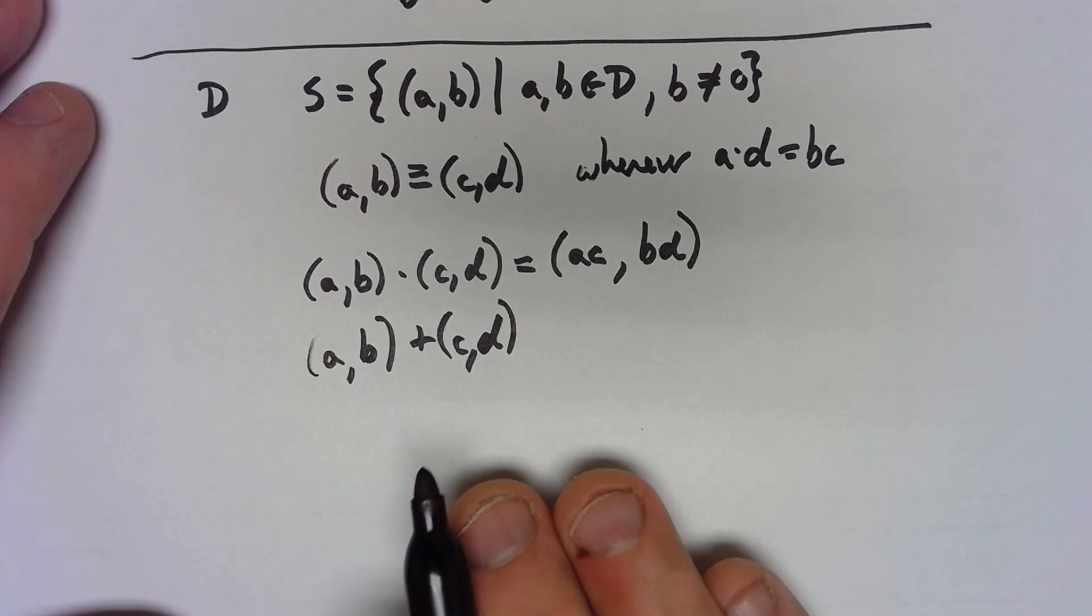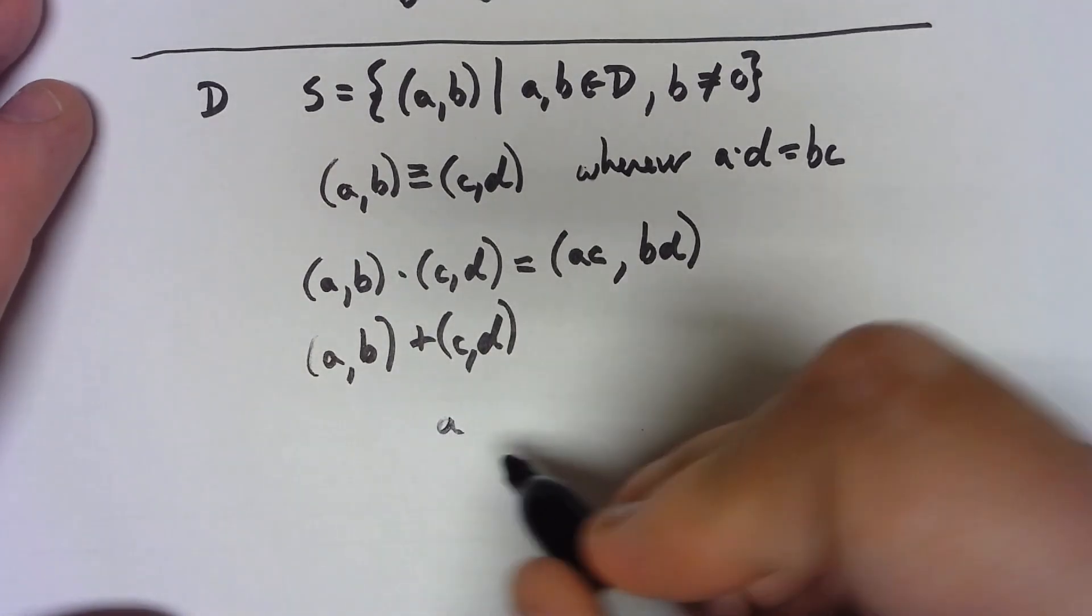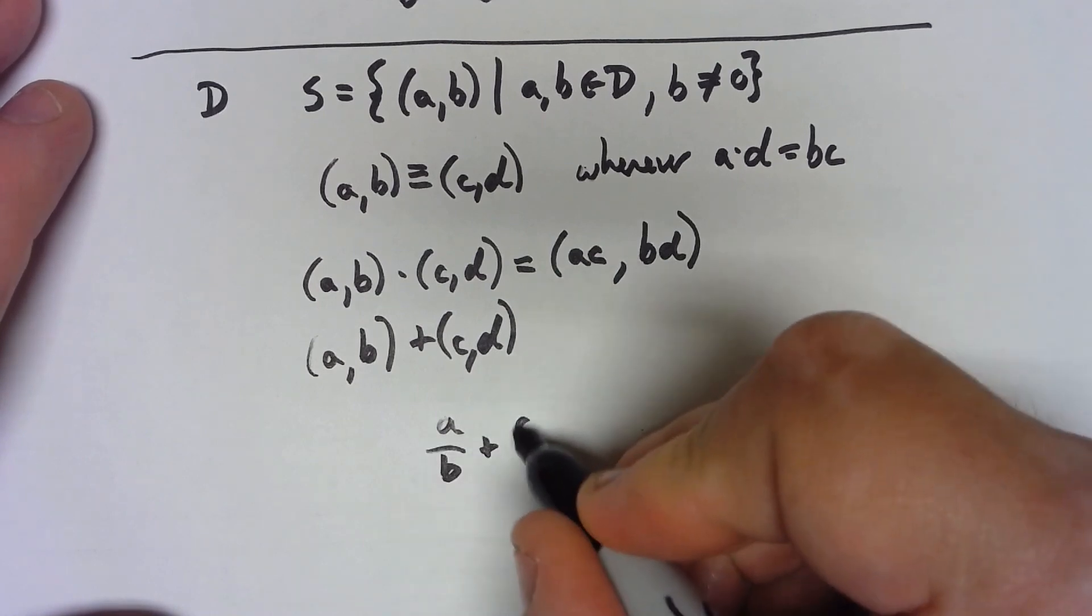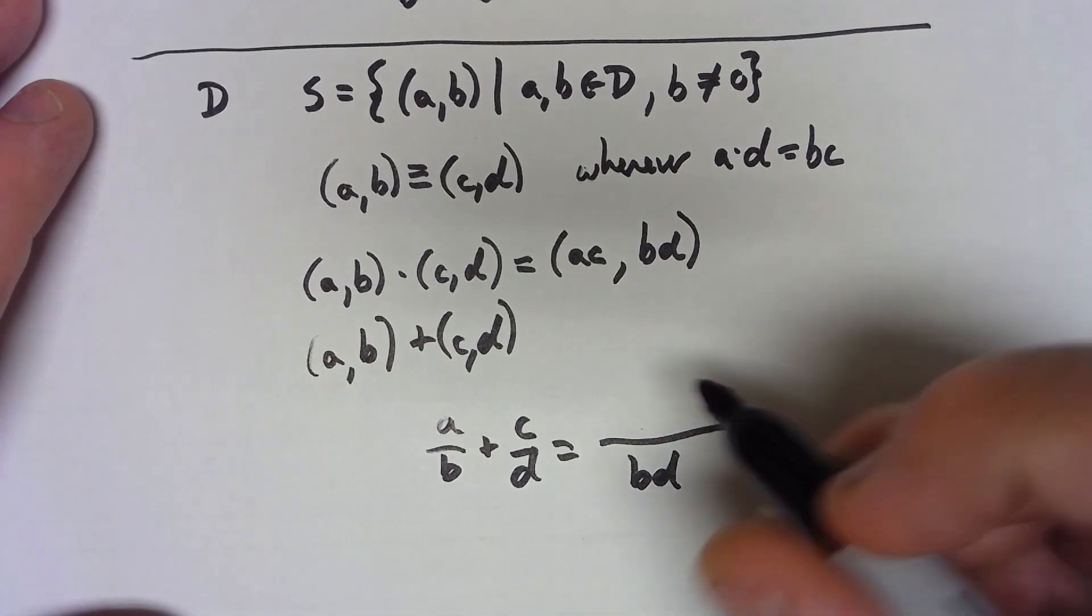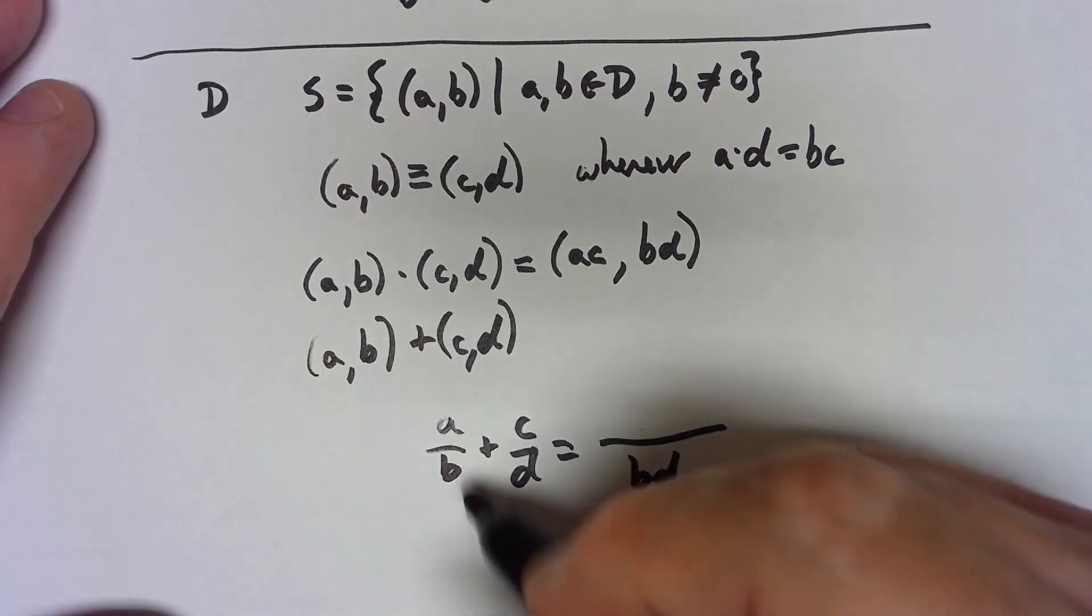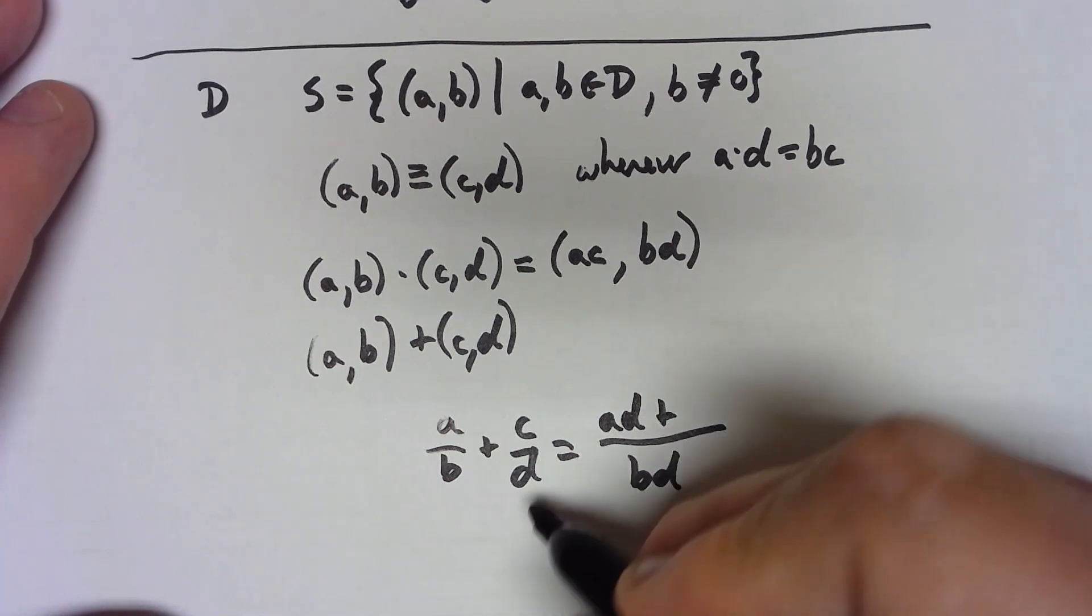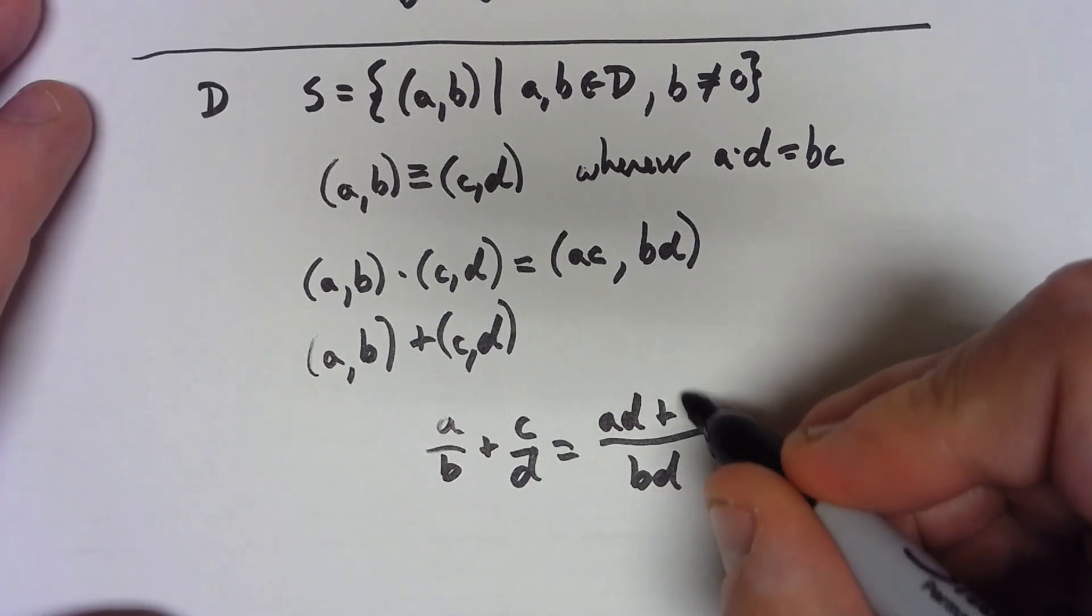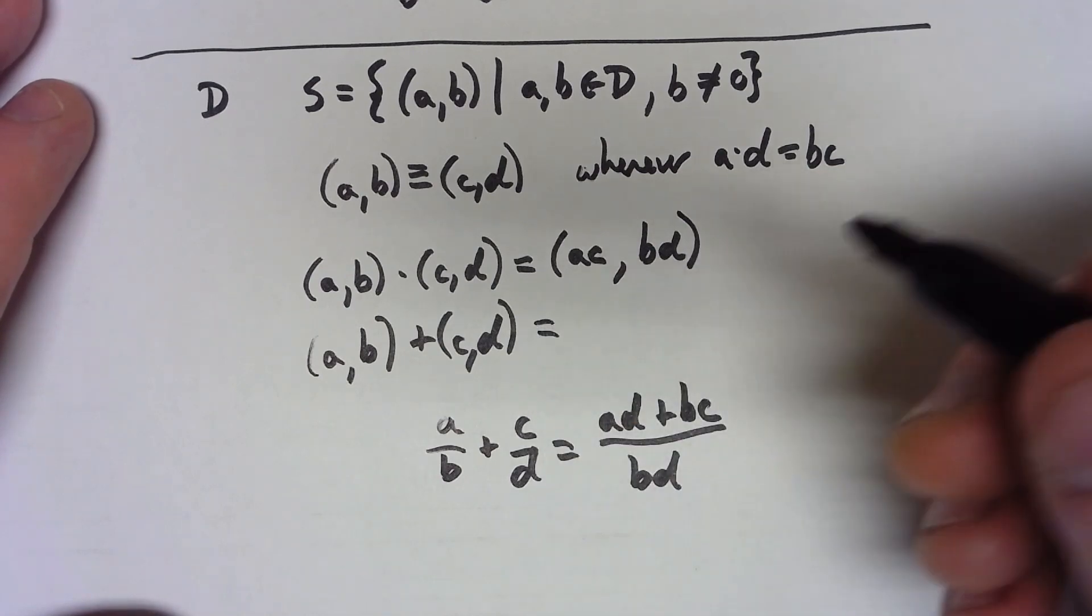And again to sort of justify what we're doing let's think about how it works for rationals. For rationals, if you take a over b plus c over d, you need a common denominator b times d. And so here we need to multiply by d and here we need to multiply by b.